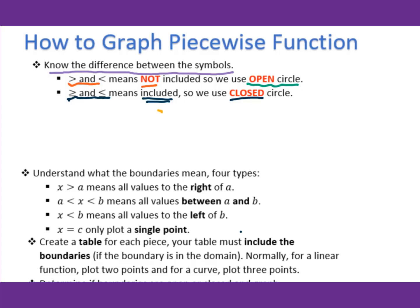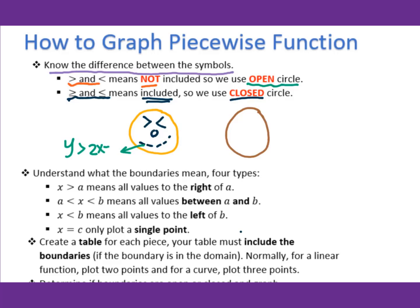To memorize this, we use the happy face and the angry face. When you have greater than or less than — no equal sign — that means the open circle. For an inequality function, you use the dotted line. For example, when graphing y greater than 2x plus 3, you use the dotted line to sketch the linear function and shade the portion above the line.